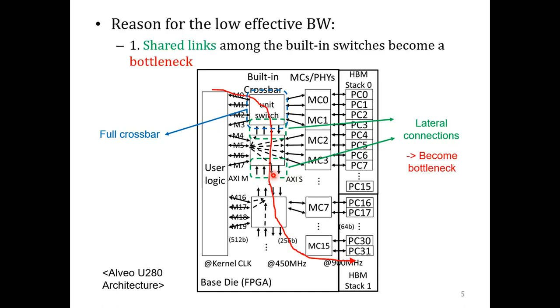But you can also see that the links between the NoC switches are shared among multiple AXI masters. So when multiple processing elements, or PEs, access multiple PCs, the shared links become the bottleneck.